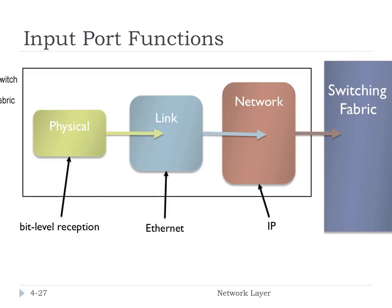One thing to think about here is whether buffering will happen, and if so, how. This switching fabric has to do a lot of work to connect input links to output links using the forwarding table in memory. The goal of the router is to complete input port processing at line speed. If datagrams arrive faster at all of the input ports than the forwarding rate of the switching fabric, then queuing will have to occur, meaning we buffer packets while waiting for the switching fabric to become available.